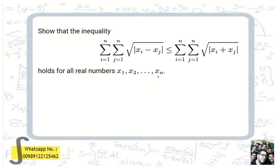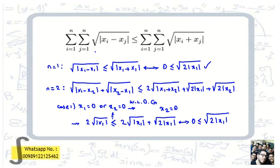When n equals one, we have x1 minus x1, which is zero, and it is less than or equal to the square root of the absolute value of x1 plus x1. This is equivalent to zero being less than or equal to that term, which is obvious. So n equals one is done, and we need to check more small examples.